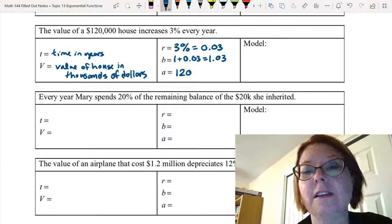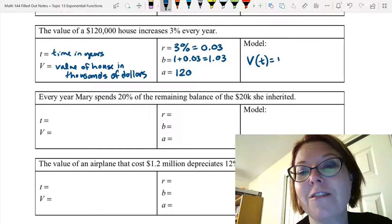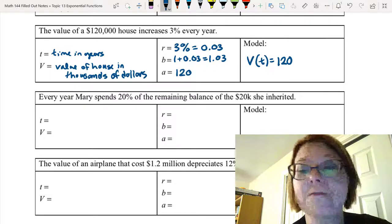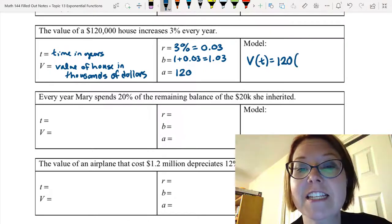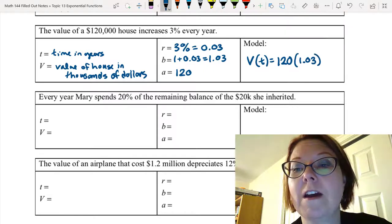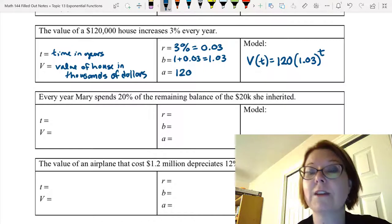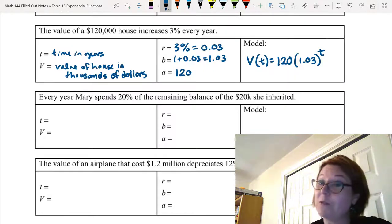Our model would be capital V of T equals the initial value, which for me is 120. Might be 120,000 for you. Just depends on how you defined it. And then inside of the left parentheses, I'm going to write 1.03. That's the growth factor. Then a right parentheses and raise that to the T power. Hopefully you got that one too.